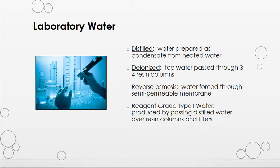There are several different types of water used in the laboratory — specifically type 1, type 2, and type 3 — and type 1 is the most pure. Lab water can be prepared by distillation, deionization, or reverse osmosis. Distilled water is prepared as condensate from heated water; this method removes most minerals, but volatiles such as chlorine or ammonia may remain, and it can be used as type 2 water. Deionized water is tap water passed through 3-4 resin columns; charged particles trap and remove impurities, but this method does not remove all organic materials — most notably, it does not remove bacteria. It can be used as type 3 water, but you would want to consider a different type of water for use in microbiology.